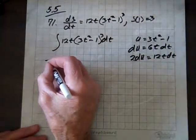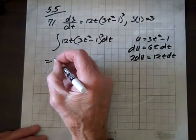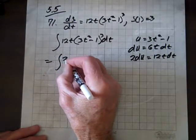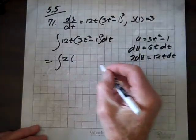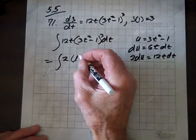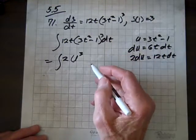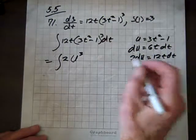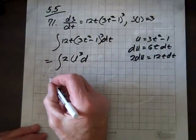So this equals the integral of, and I'll put that 2 here. And looks like we have a u, 2u to the third, because u is 3T squared minus 1, and du. Yeah, 2 du. Okay, good.